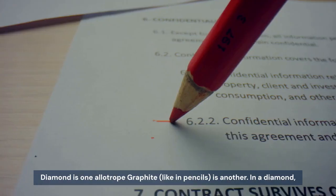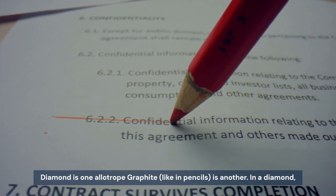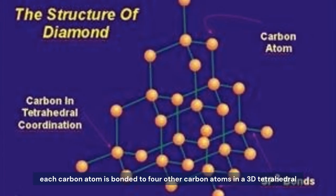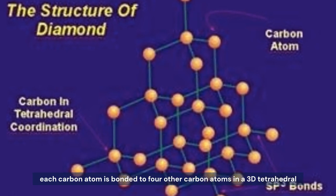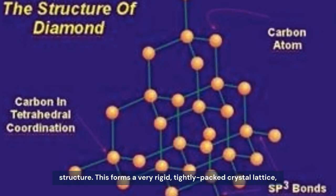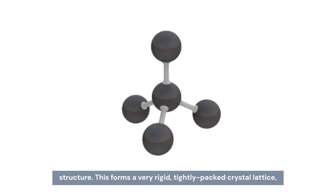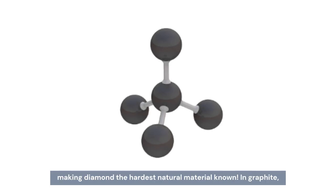Diamond is one allotrope, graphite, like in pencils, is another. In a diamond, each carbon atom is bonded to four other carbon atoms in a 3D tetrahedral structure. This forms a very rigid, tightly packed crystal lattice, making diamond the hardest natural material known.